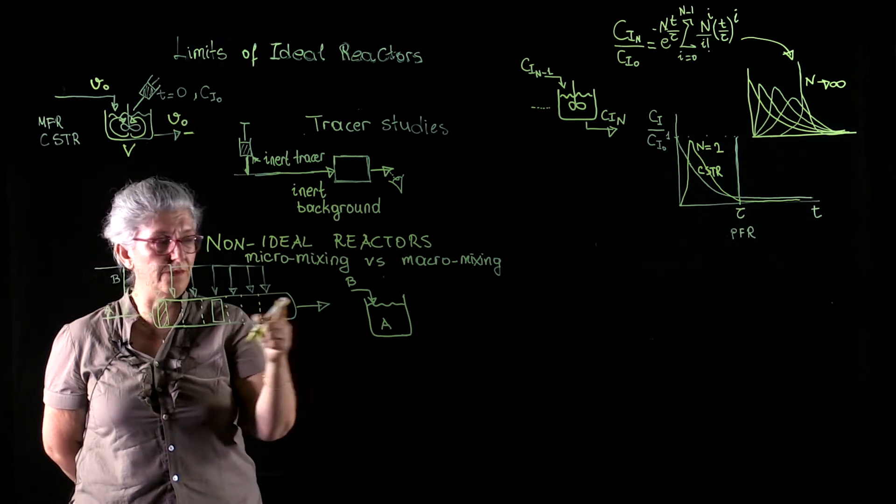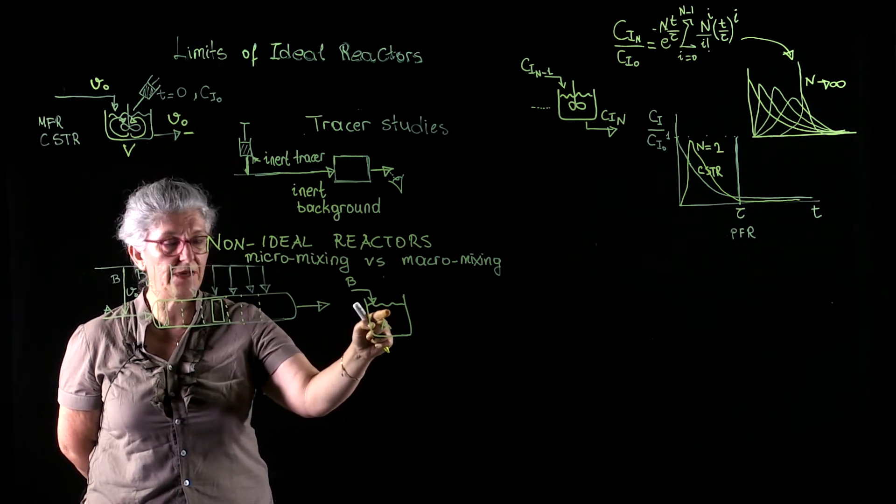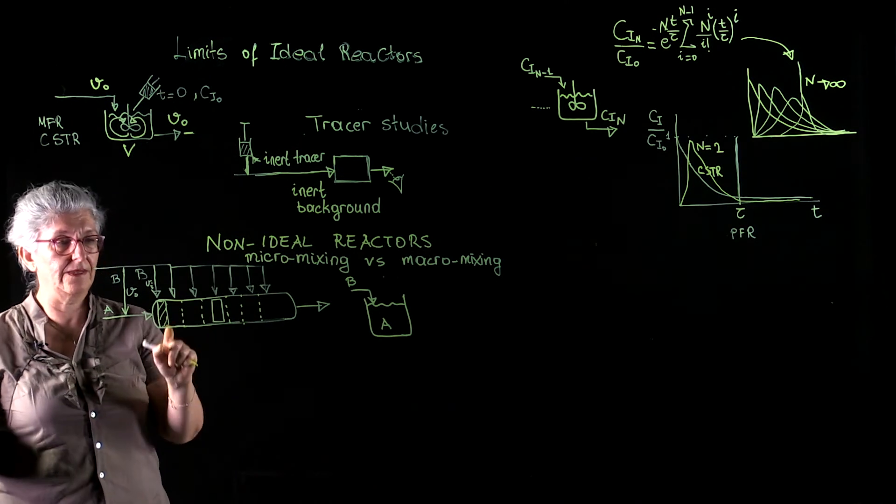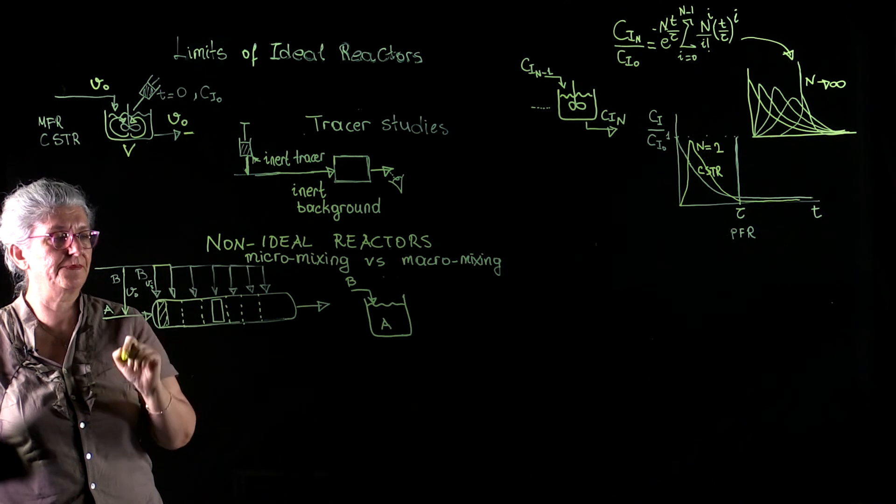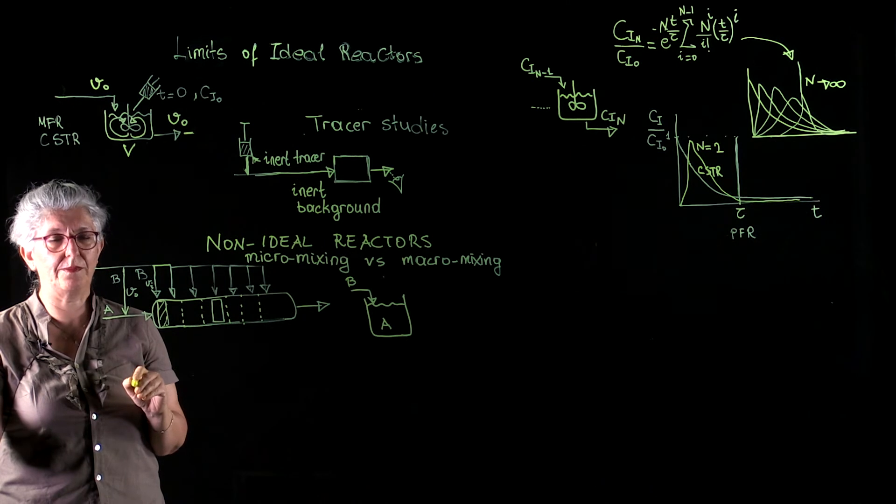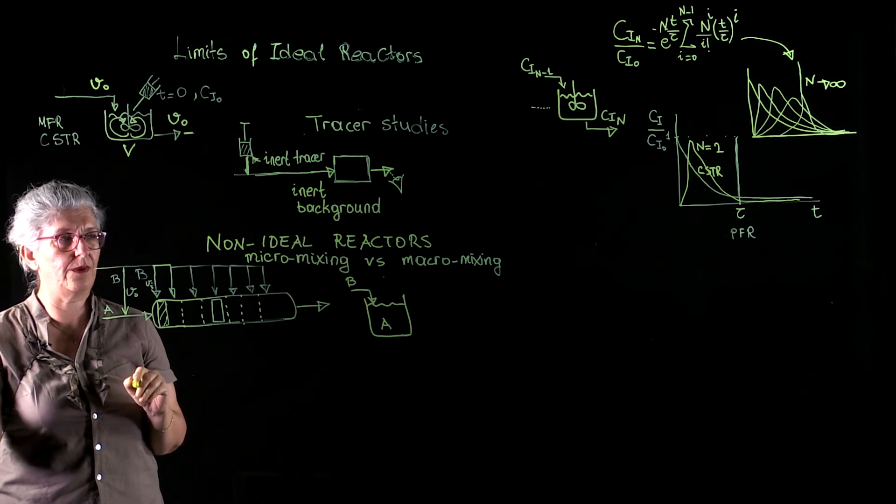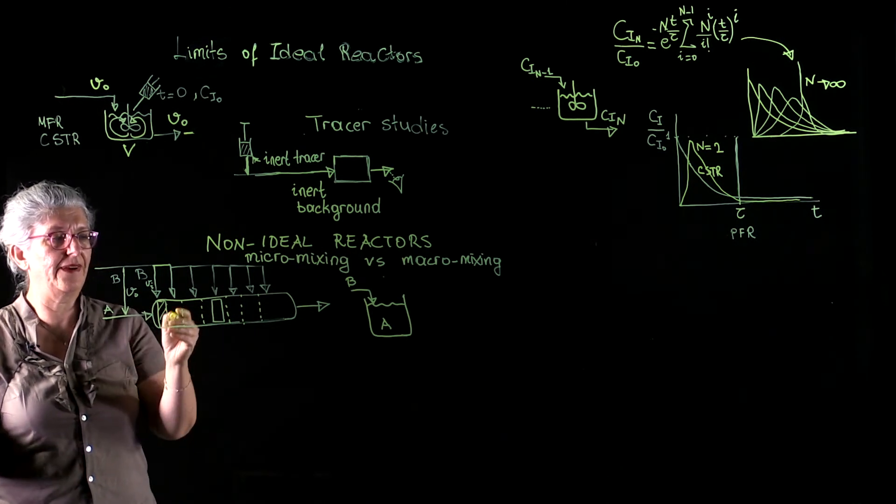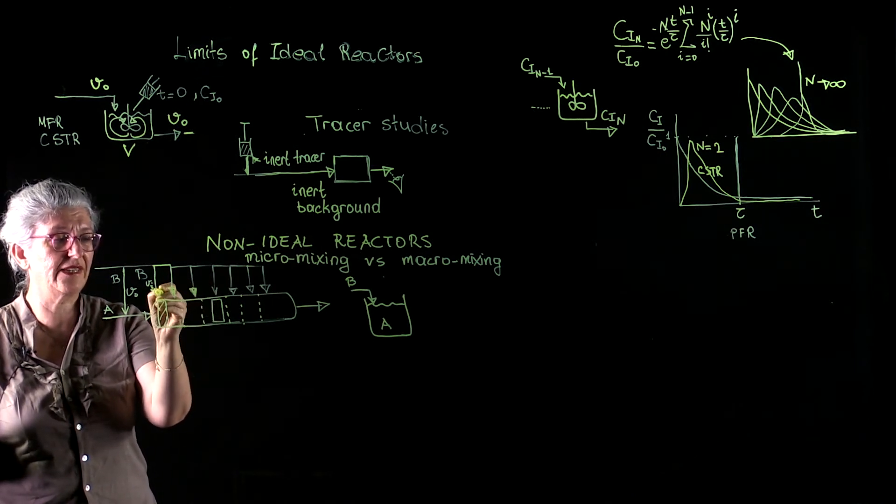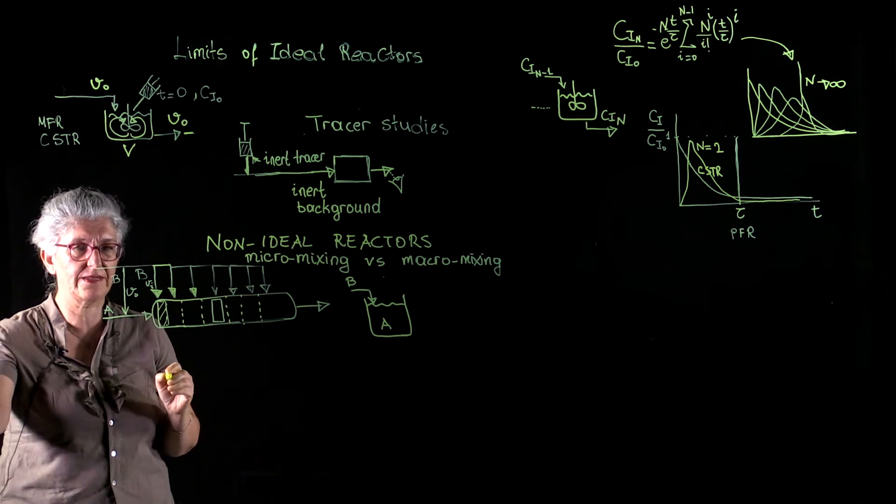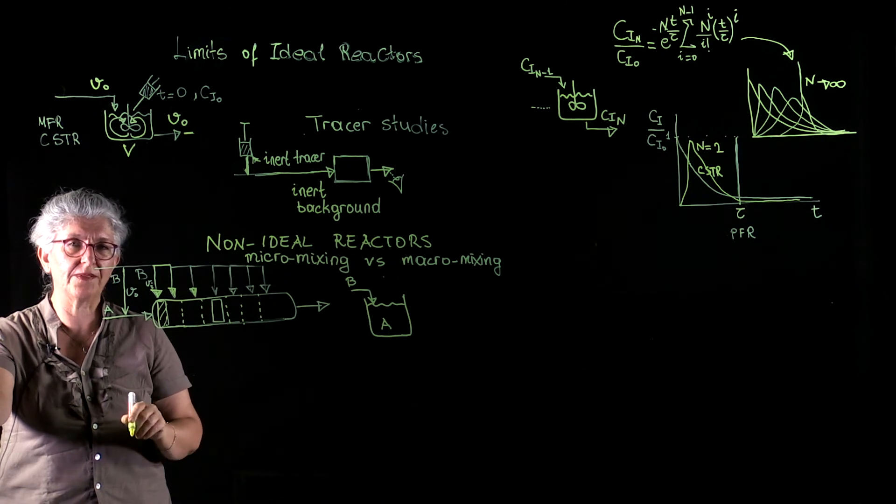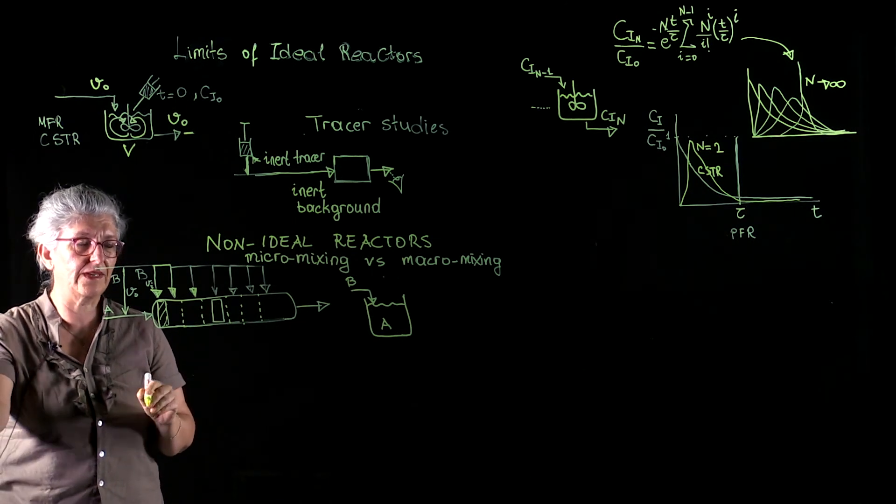So those two operations, if this is a perfectly mixed semi-batch reactor, and if it is a perfectly plug flow reactor, they are identical. So this is one type of operation where we model non-idealities, or we take care of the non-idealities, by dividing reactors into compartments that we can tackle mathematically.